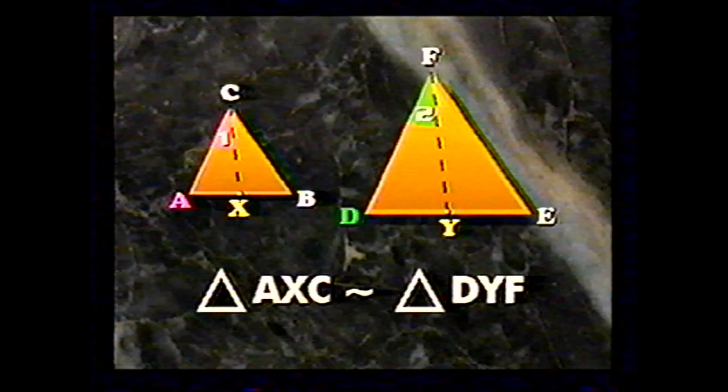Finally, the altitudes are also in the same ratio. Altitudes are the segments drawn from C and F perpendicular to the opposite sides. Triangles AXC and DYF are similar by AA: angles 1 and 2 are both right angles and therefore congruent, and angles A and D are congruent as corresponding angles of the original large triangles. Since triangles AXC and DYF are similar, the altitudes CX and FY are in the same proportion.